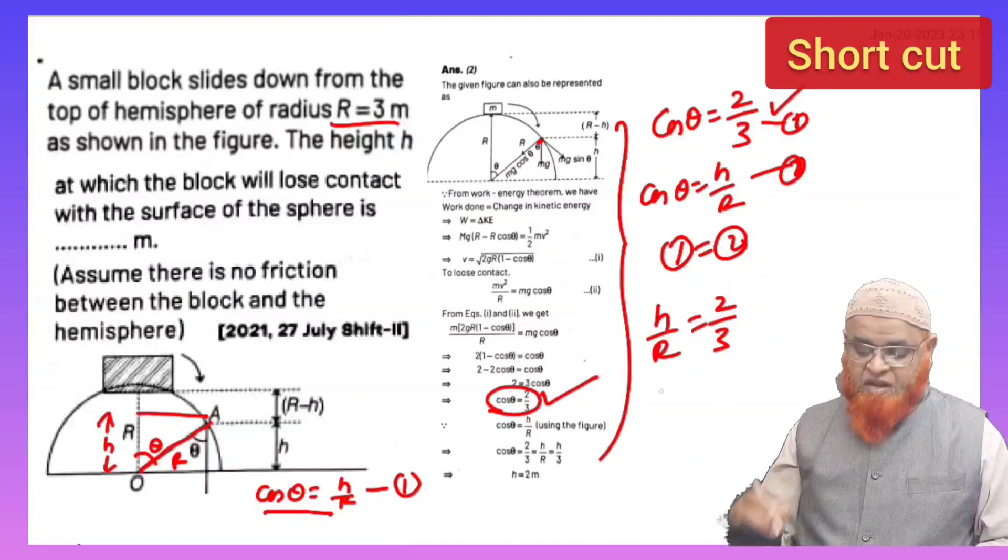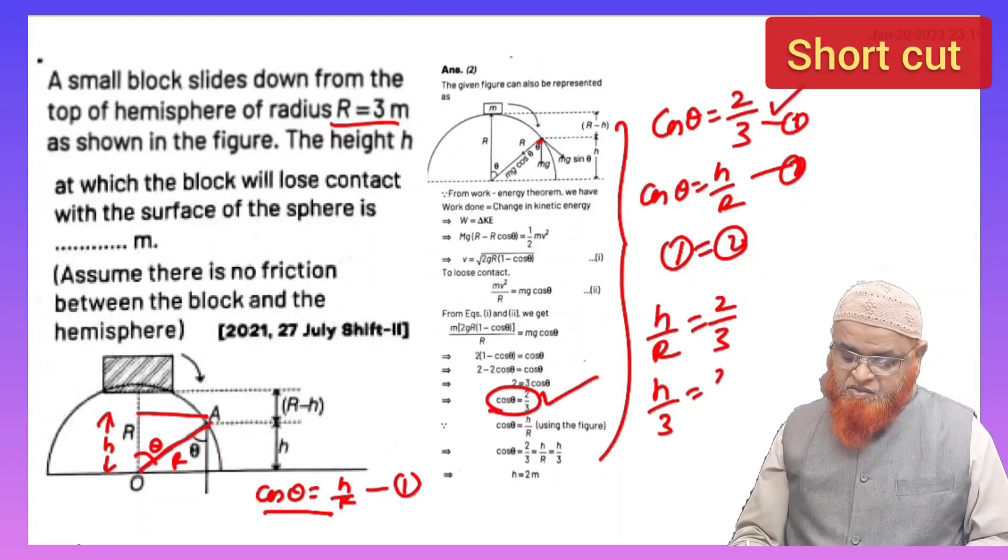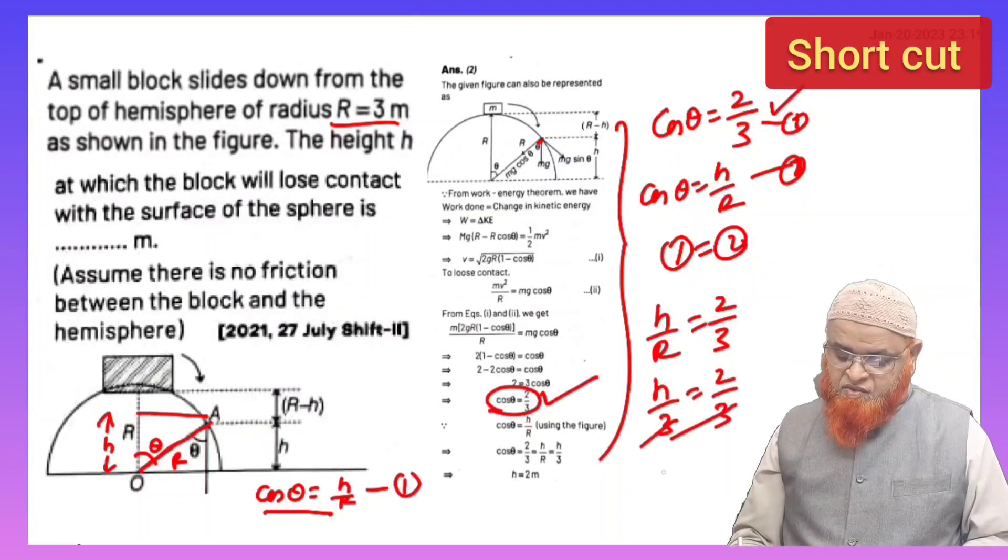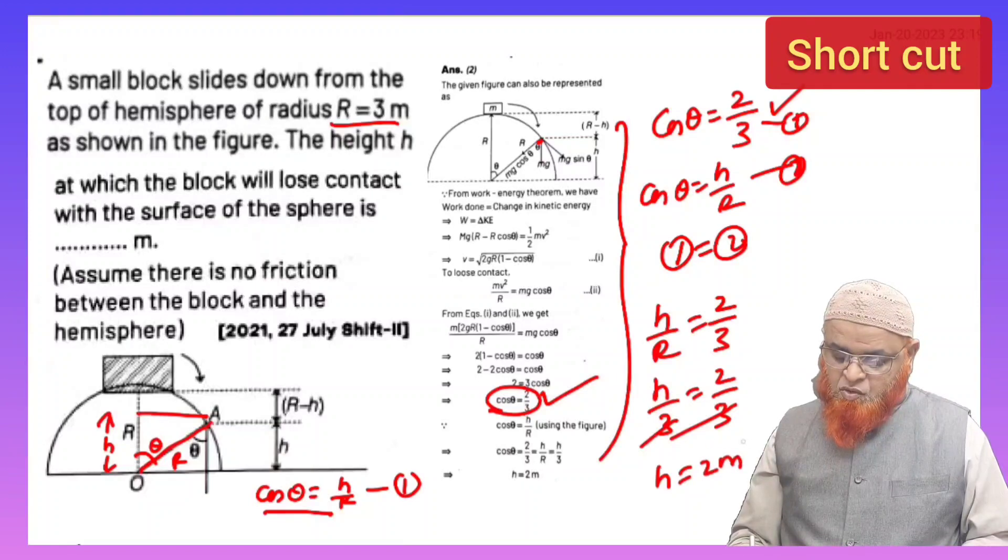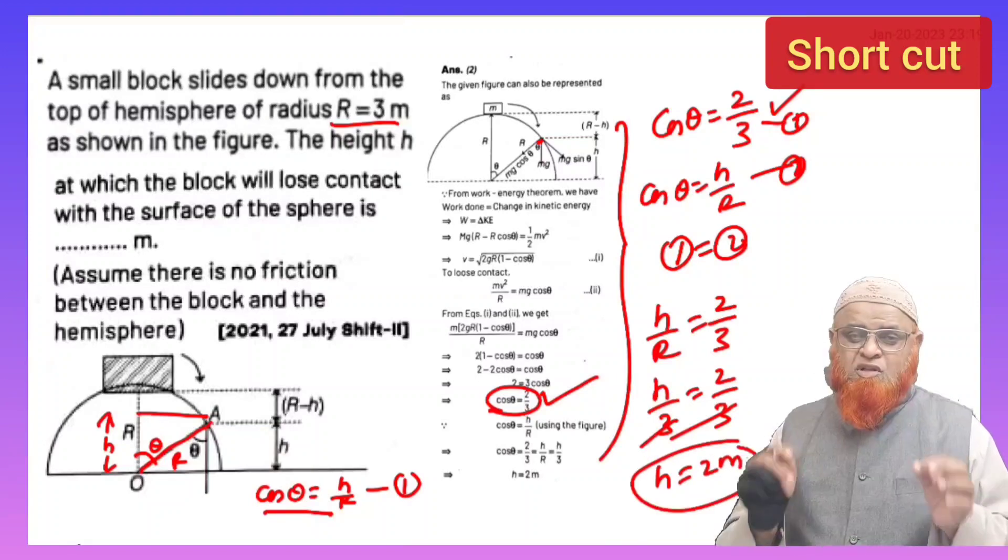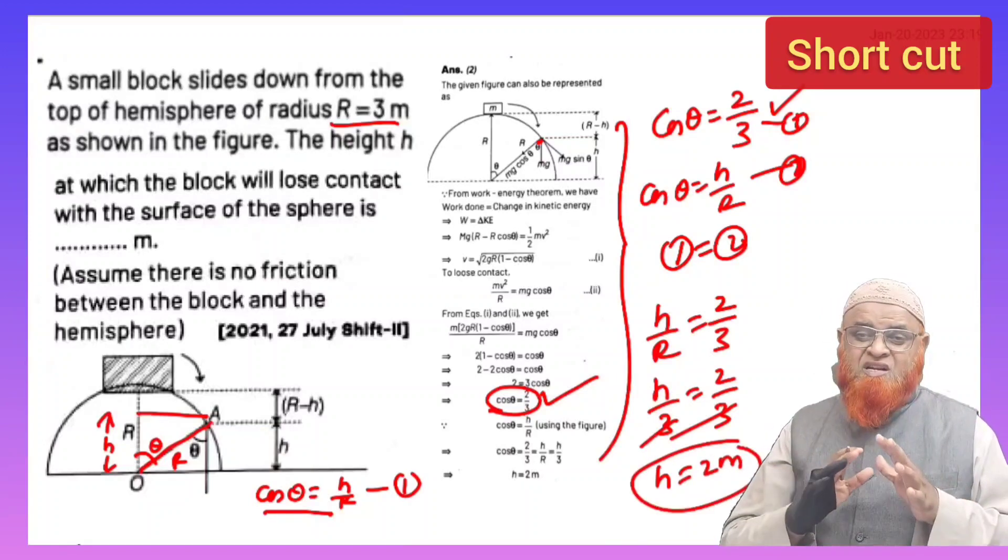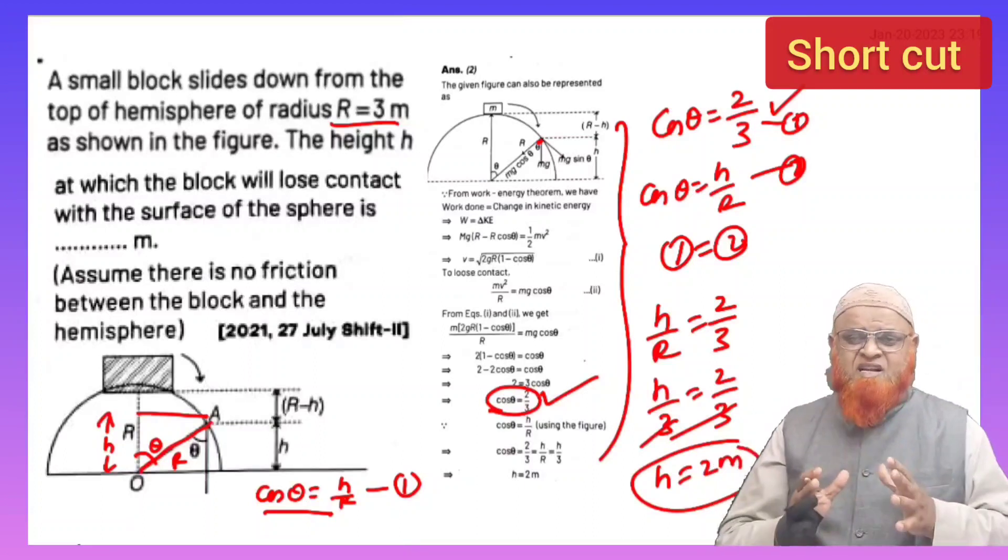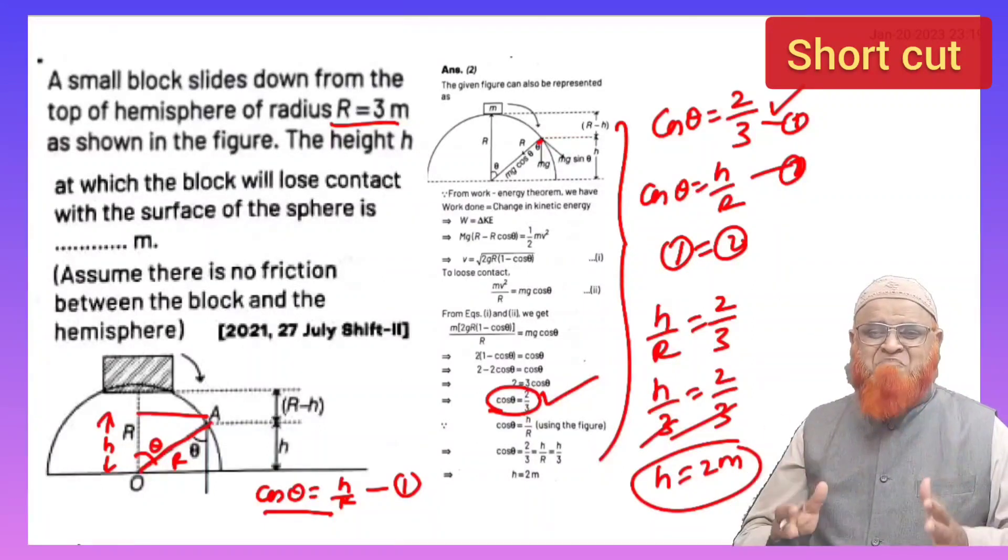You can just write h by r is equal to 2 by 3. And according to the problem the radius is given as 3 here, so h by 3 is equal to 2 by 3. So 3, 3 gets cancelled, h equals 2 meters. Did you solve the problem in fraction of seconds without any tension, without any mention, without any intention? You will get the answer. Thank you very much.